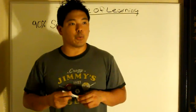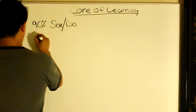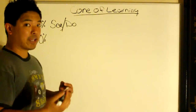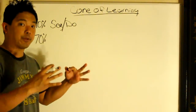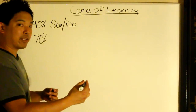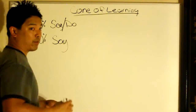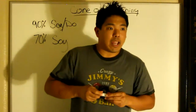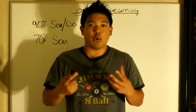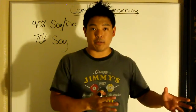From there it goes down to 70%. As we do less or different activities, the percentage goes down. We remember 90% of what we say and do, but only 70% of what we say. Basically, if you say things and don't do it, in a two-week time span you're going to forget about things — you'll only remember 70% of what you say.